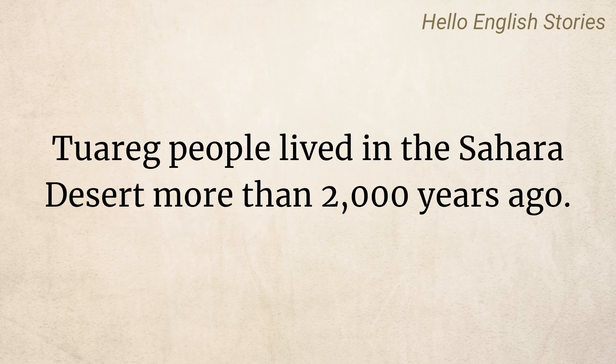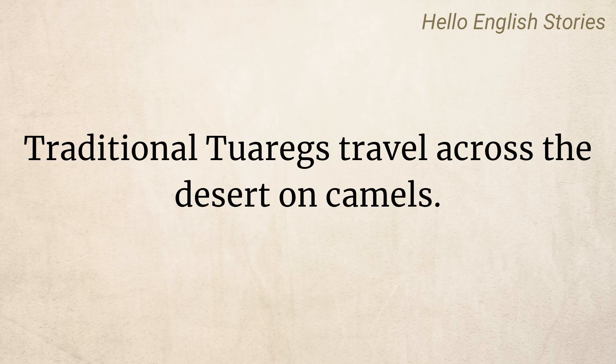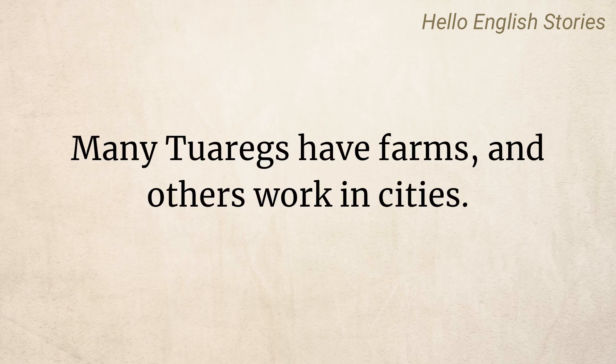Tuareg people lived in the Sahara Desert more than 2,000 years ago. They are called the blue people because of the color of their clothes. Traditional Tuaregs travel across the desert on camels. They live in tents made from animal skins and wood. Many Tuaregs have farms and others work in cities.